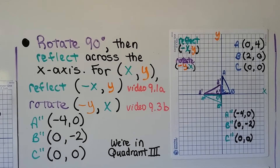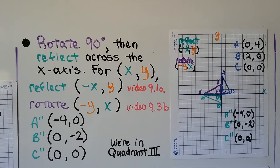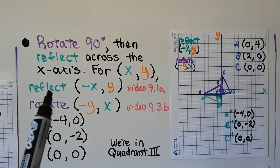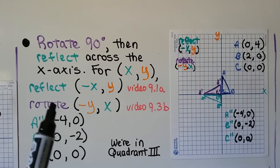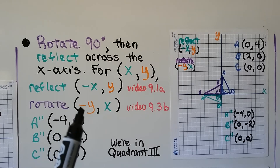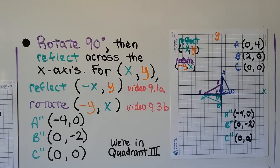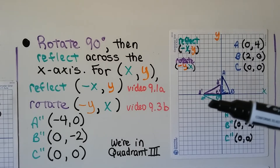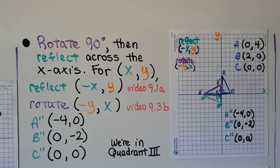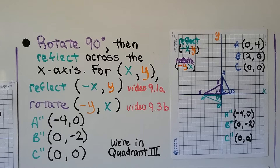Now let's try doing a 90-degree rotation and then a reflection across the x-axis. Remember, for x, y when we reflect — we learned this in video 9.1a — we do the inverse of x and y. If we rotate, we use the inverse of y and then x — we learned that in video 9.3b. We start in quadrant 1 with our little triangle. It rotates 90 degrees, then reflects across the x-axis and ends up in quadrant 3. We get the ordered pairs for A double prime, B double prime, and C double prime.